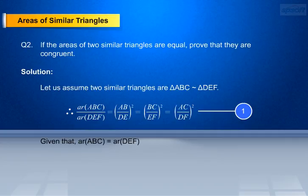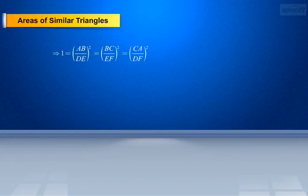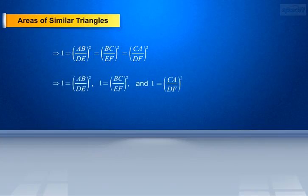Given that AR of ABC equals AR of DEF. Therefore AR of ABC by AR of DEF equals 1. By substituting the above values in equation 1, we get: 1 equals AB/DE whole square, equals BC/EF whole square, equals CA/DF whole square. This implies 1 equals AB/DE whole square, 1 equals BC/EF whole square, and 1 equals CA/DF whole square.